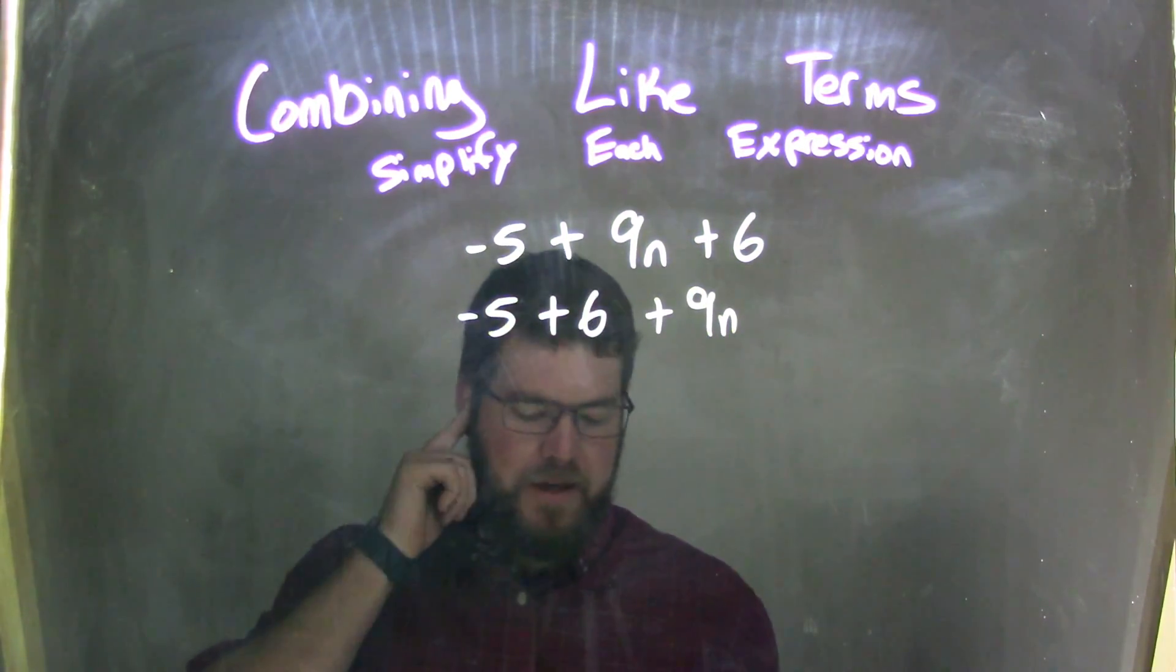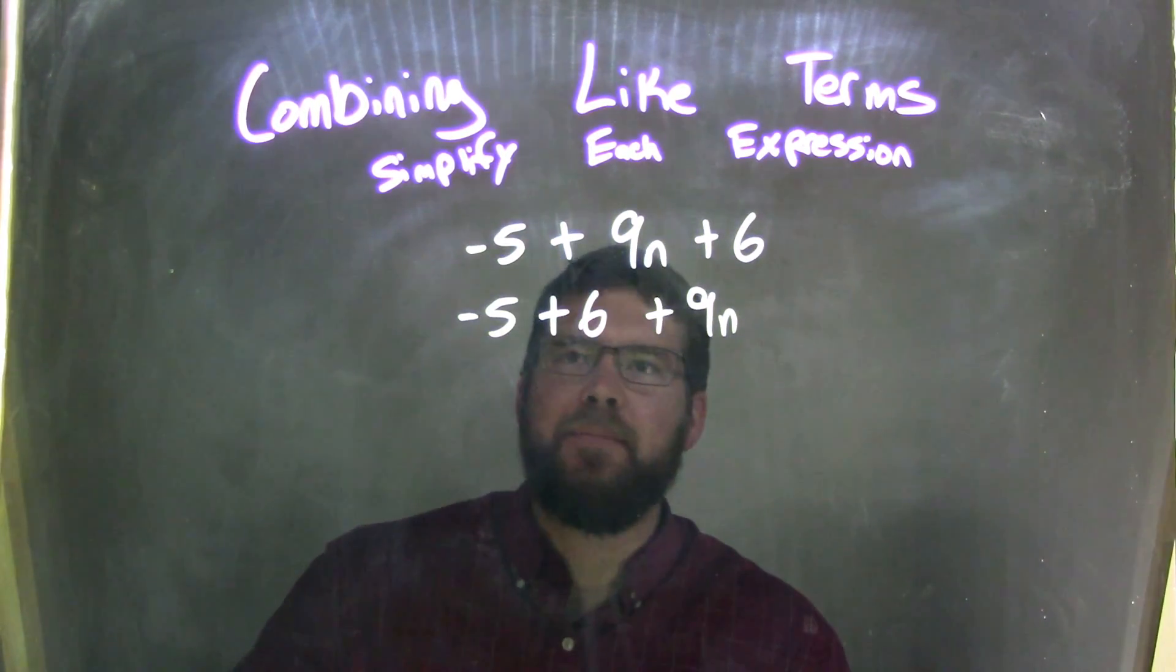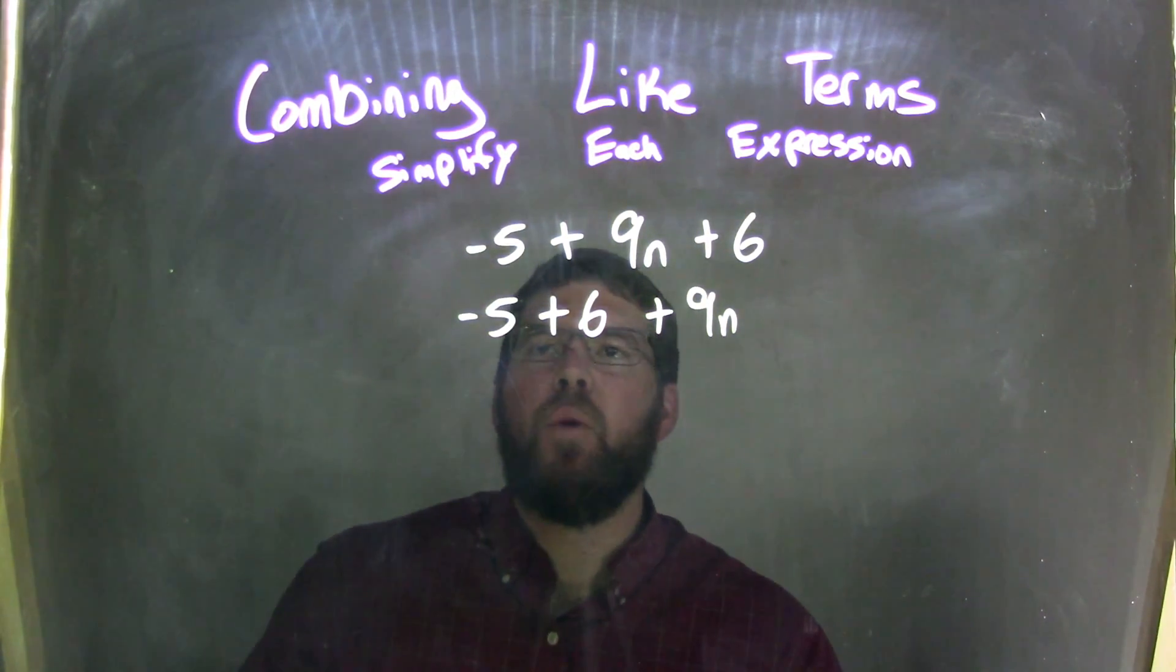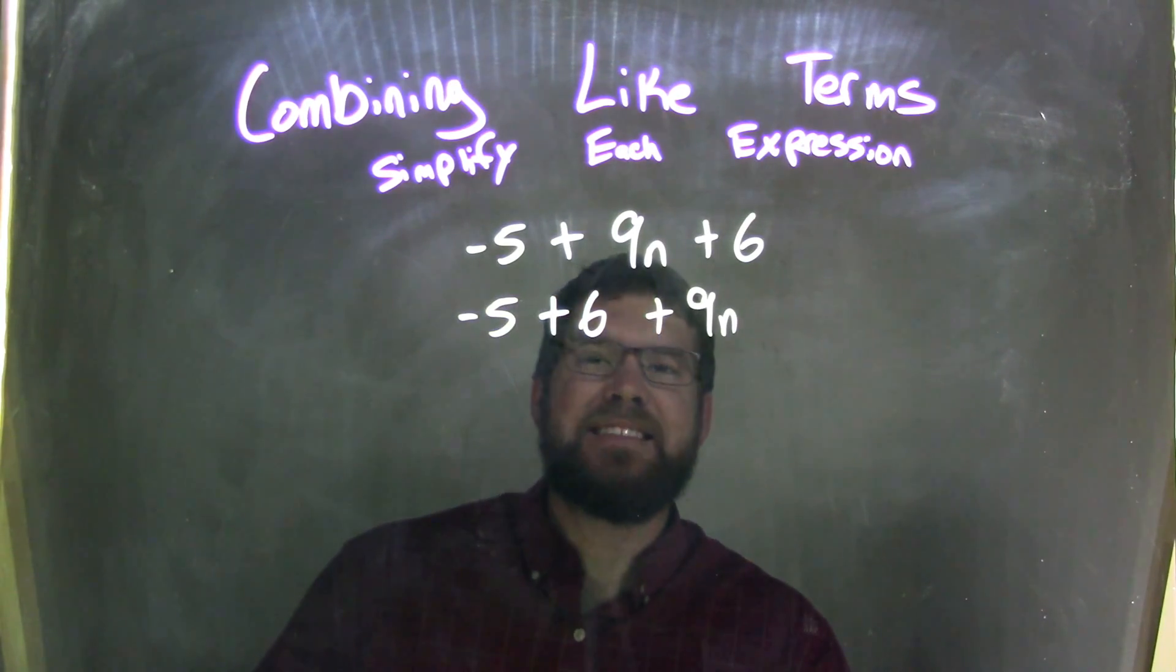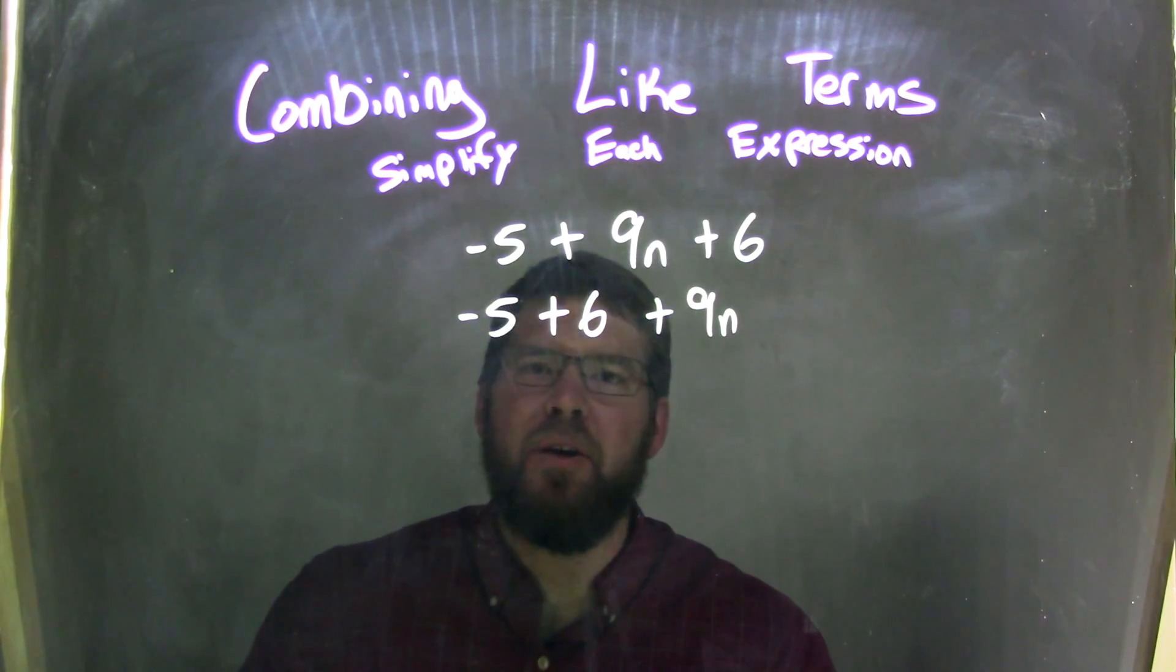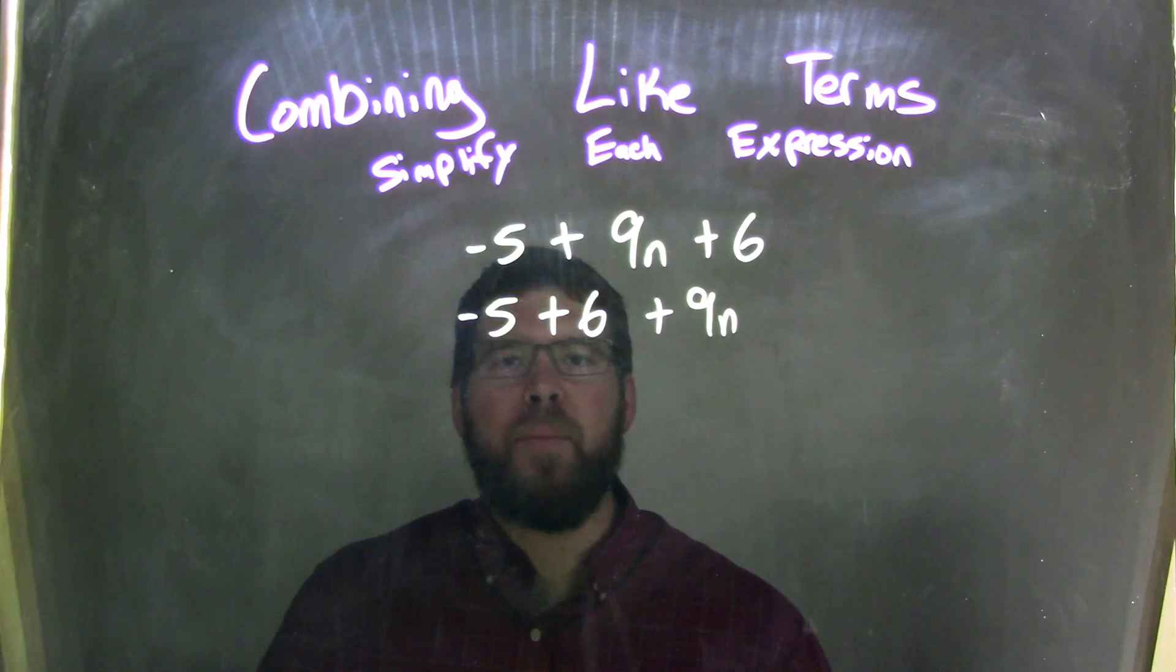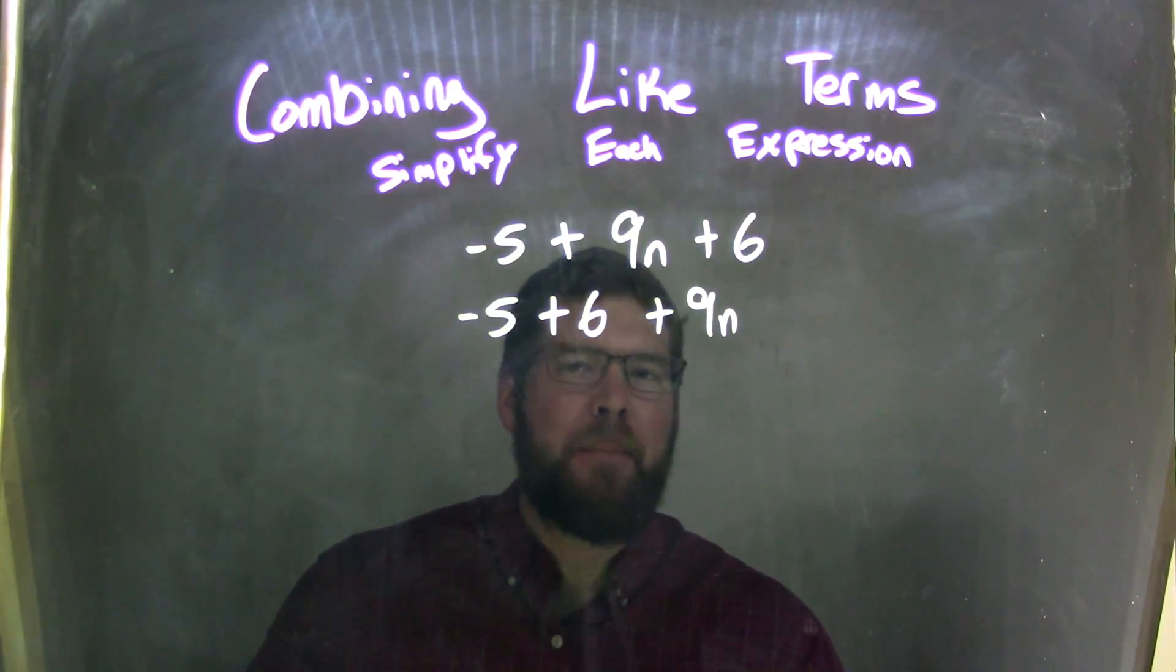So, now I have all my like terms, my numbers first, and then my variable second. Well, negative 5 plus a 6, they're just one apart here. They're just one apart. So, we can see that's going to be a positive 1.